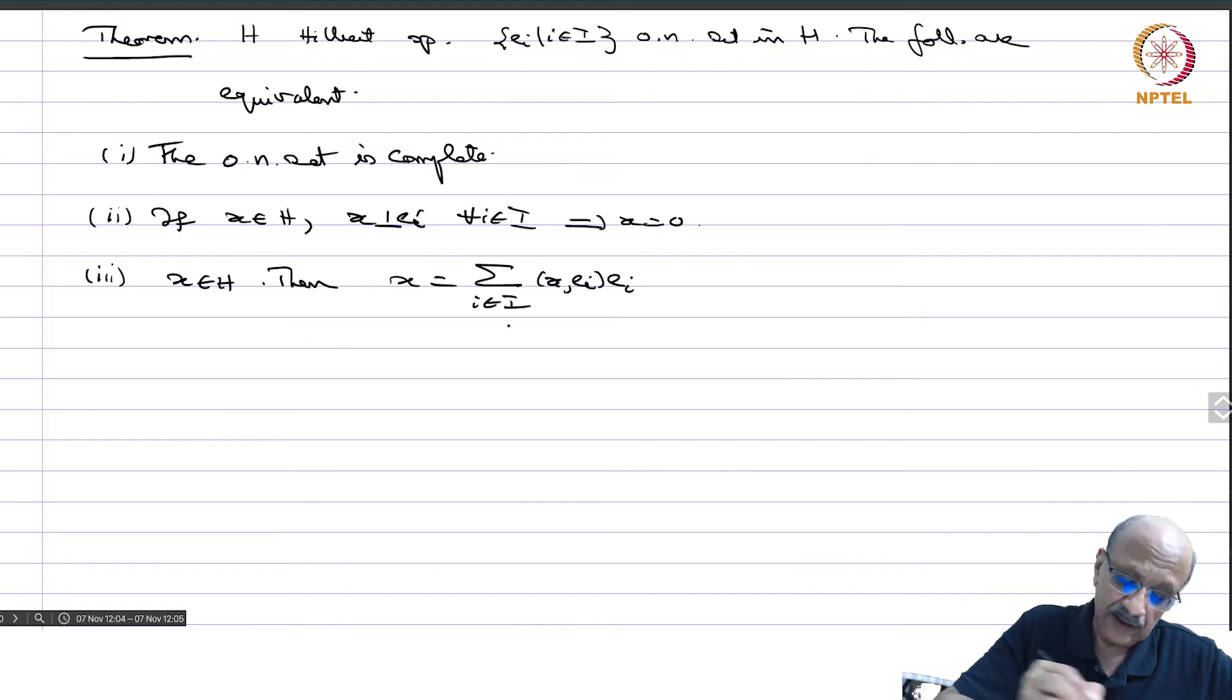Then is equivalent to saying that the space is complete. Four, norm x, x in H, then norm x square is equal to sigma i in I, mod x EI square. This is called Parseval's identity.